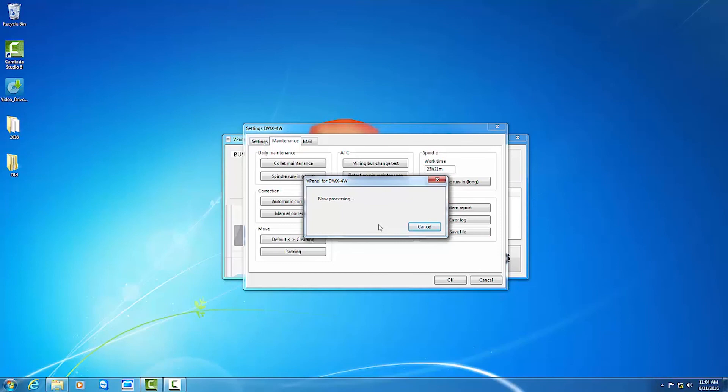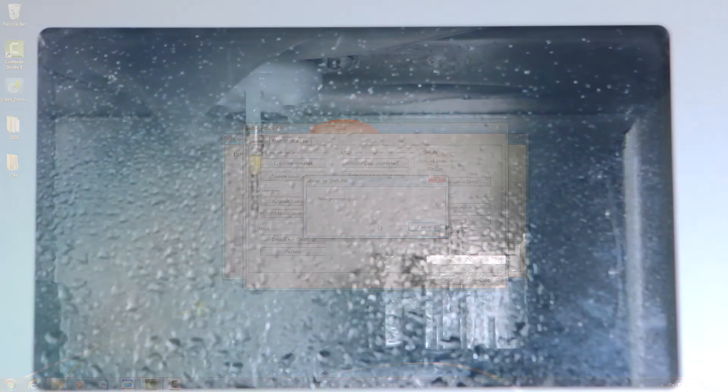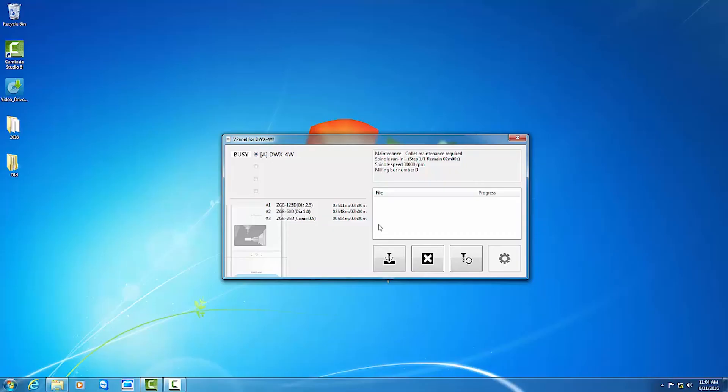The spindle run-in will begin. During this time, the machine status light will flash blue and the remaining time will be shown in vPanel.